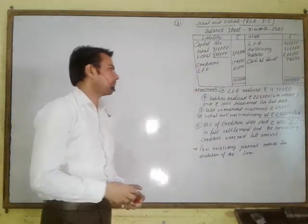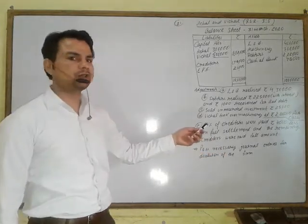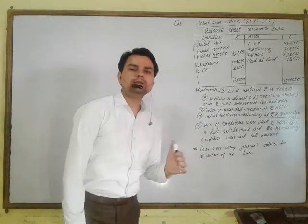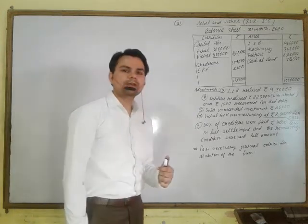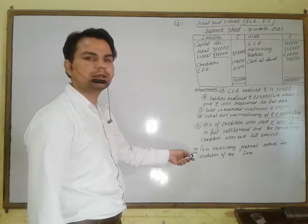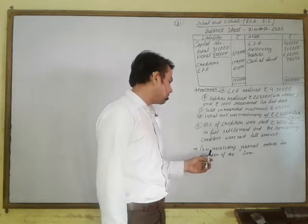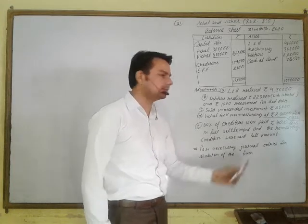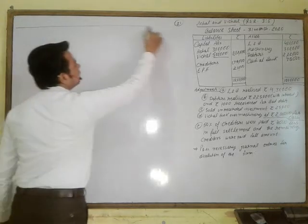After this balance sheet, you have been given some adjustments about the realization of assets and liabilities. As I taught in previous videos, first read the last line of the question and draw the format. In this question, you have been asked to pass necessary journal entries for the dissolution of the firm. For this purpose, draw the format of the journal.